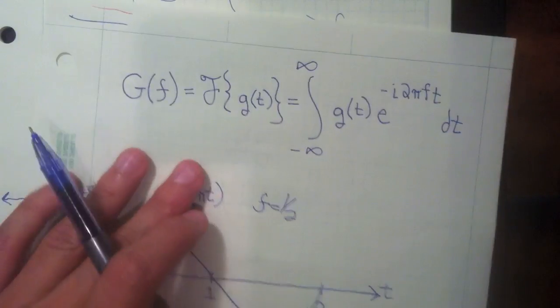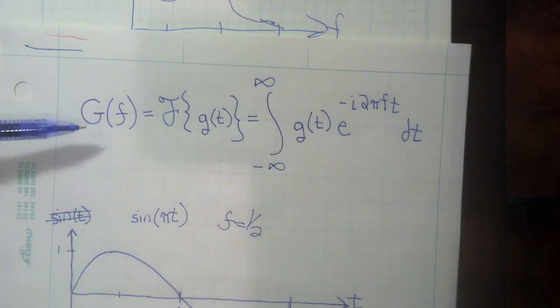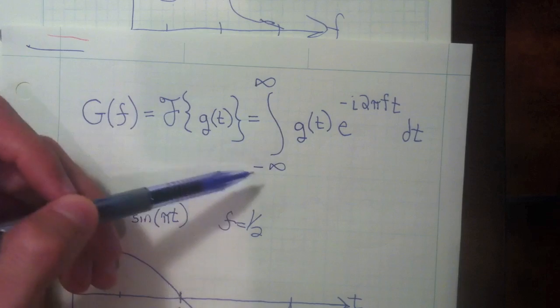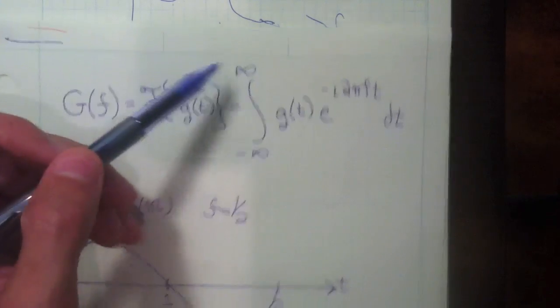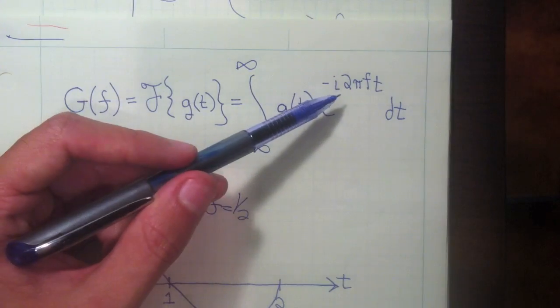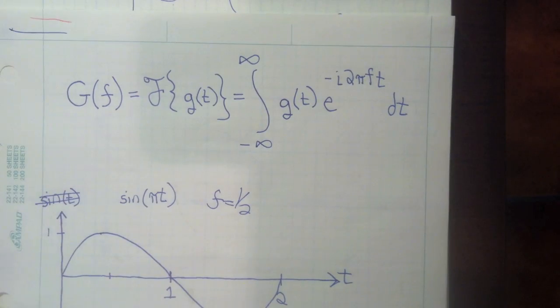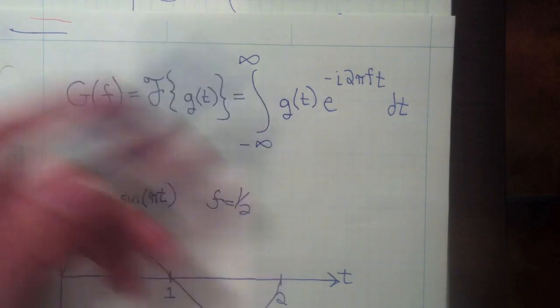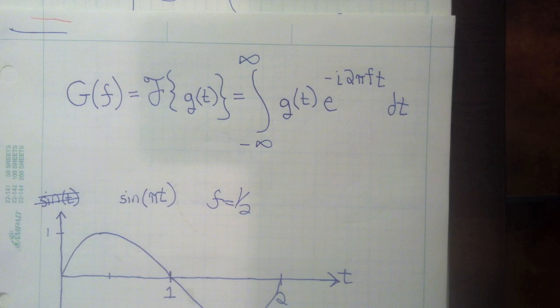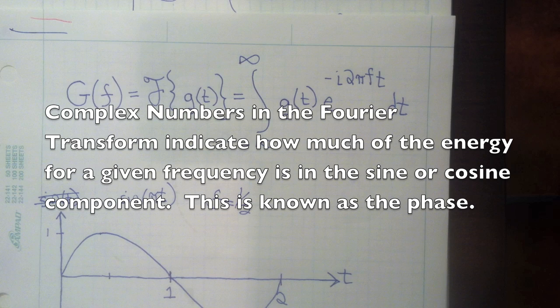So if we go back to the original definition, we can see it still looks complicated. G of F is this integral of the function times this exponential complex number, looks formidable. So what are the complex number? I mean, what does that tell you?